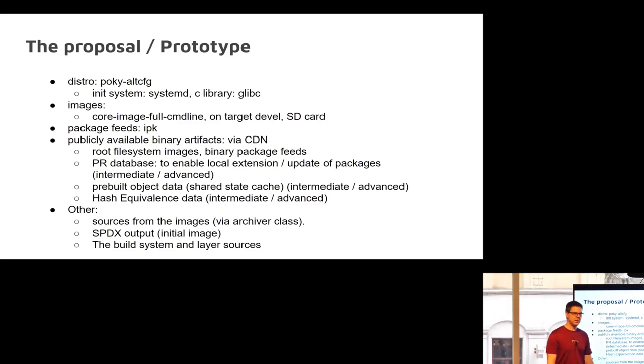The distro it's using is Poky alt config. So that means you get systemd and glibc as the base images. We wanted to hit the widest amount of familiar surfaces that people might know as part of these references. It's using core image full command line as the rough first image. So you can do some on target development and we're going to do an SD card image. It is IPK. Document it if you want to use deb or RPM. Document how to do that.